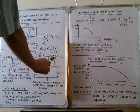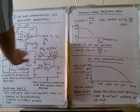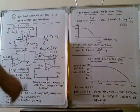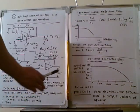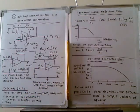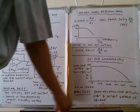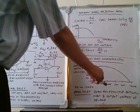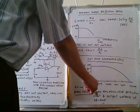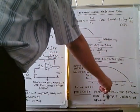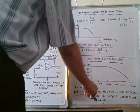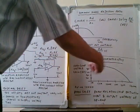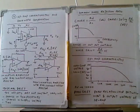Phase shift occurs when we apply an input — there is a phase difference between the input voltage and the output voltage. Phase shift refers to the phase relationship between the input and output voltage of the operational amplifier.